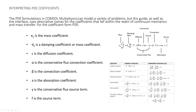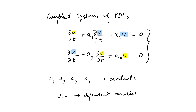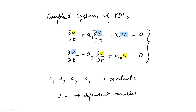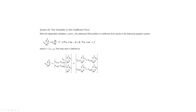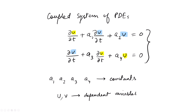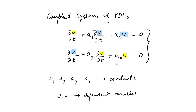In COMSOL Multiphysics, the PDE interface solves equations in a specific coefficient form — I'll attach the slide so you can download and check the details. For two coupled equations we use two dependent variables. The software requires us to define coefficient matrices, so that when multiplied out we recover the original equations. For example, the a1 coefficient must be defined as a 2×2 matrix.